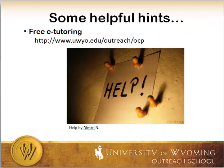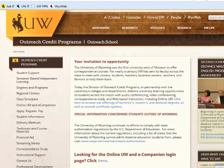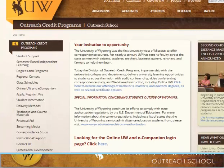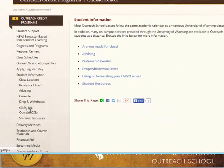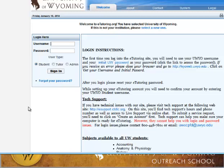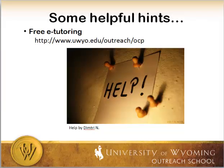You have free e-tutoring available to you 24/7. If you go to uwyo.edu/outreach/OCP — and that URL is on the slide — you end up at the Outreach Credit Programs page. Come down to student information, then to e-tutoring. You can log in to e-tutoring using your UW credentials. So go to uwyo.edu/outreach/OCP, then go to student information, and beneath that you'll see e-tutoring.